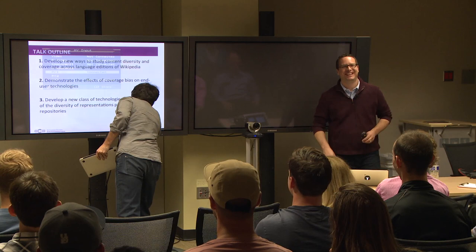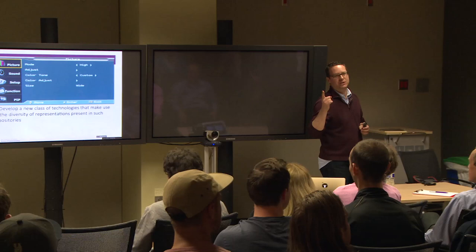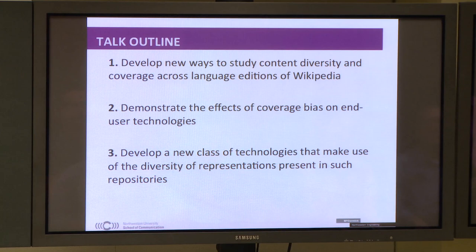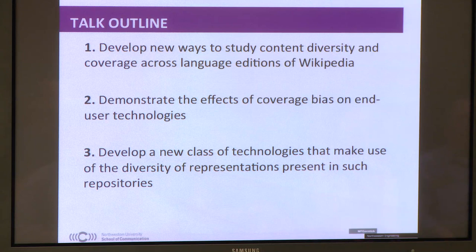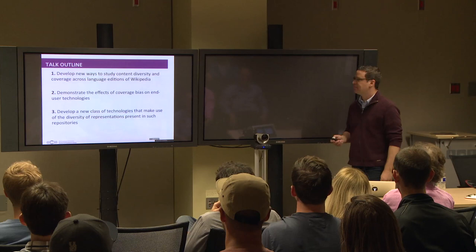So for the last few years we've been working on three things. First, we want to develop new ways to study the diversity of coverage across different language editions of Wikipedia. Second, I'm going to demonstrate what effects coverage biases might have on end-user technologies. Third, I want to talk about something we've been adamant about in our lab — not just identifying problems, but providing new ways of developing technologies that make use of these diversity representations. I'll present a system we built called Omnipedia to show how we've been working on that.